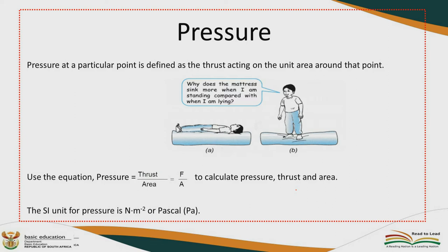Now, pressure. We need to define each and every concept we are dealing with. These definitions will help you accumulate marks because each and every definition carries two marks — it's two or nothing. We have pressure: pressure at a particular point is defined as a thrust acting on a unit area around that point. I have two pictures to illustrate this.